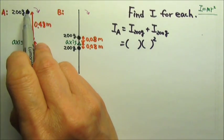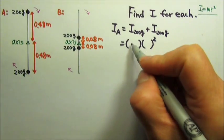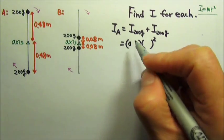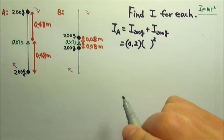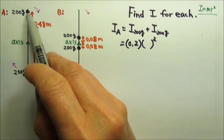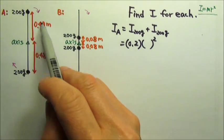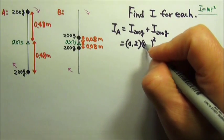For that 200-grams, the mass is 200-grams, which in standard units is kilograms, so it's 0.2 kilograms. r is the distance between the point mass and the axis, so it is 0.48 meters.